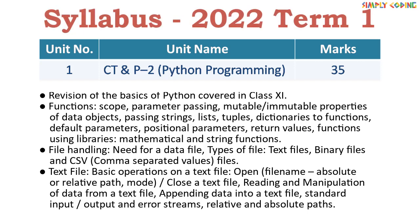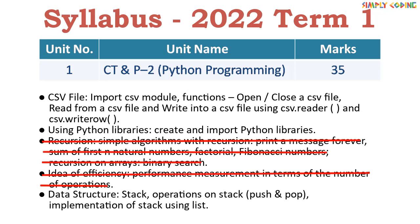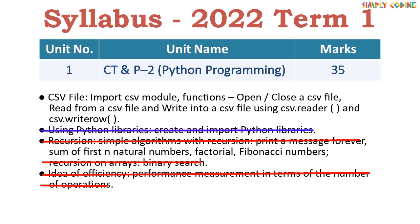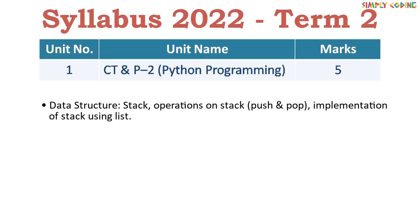In Term 1 there is 35 marks of Computational Thinking and Programming, or Python programming. The initial sections of functions and file handling remain unchanged. Recursion and the idea of efficiency were already cut last year. This year, Python libraries have been removed; however, the library classes learned in class 11, like random and statistics, are still in the syllabus. The topic of data structures has been moved to Term 2, so in Term 1 you only need to focus on Python.